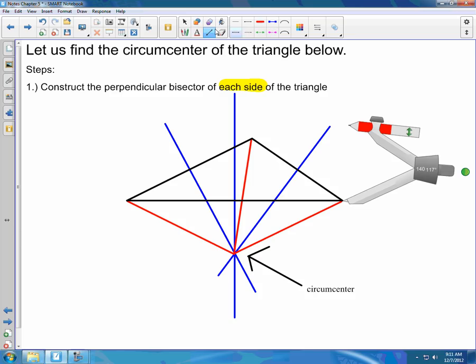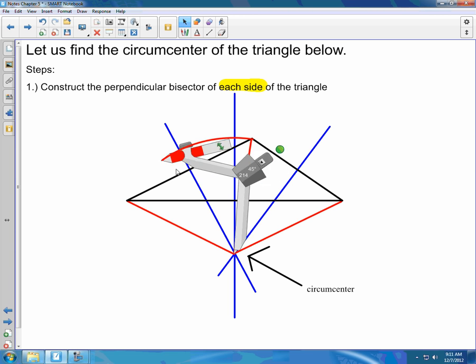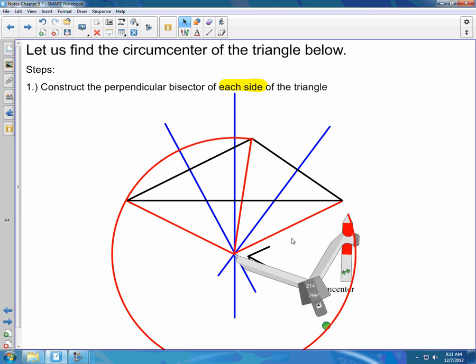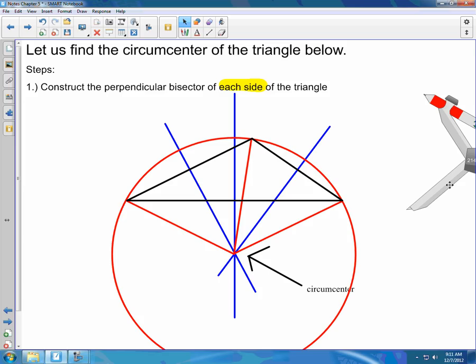What that allows us to do is then construct a circle that circumscribes the triangle. So give me just a moment here. I've got to line up. All right. So you can see we've got a circle that just goes around the vertices of that triangle. All right. So that ends our lesson today on circumcenter.